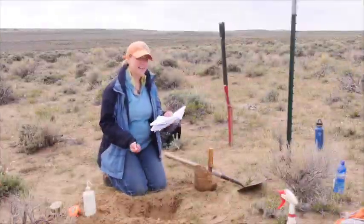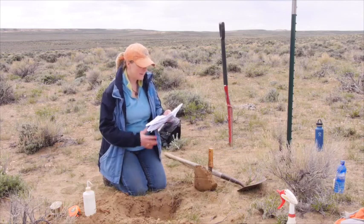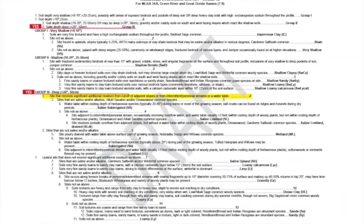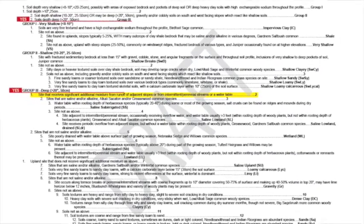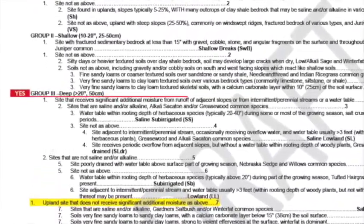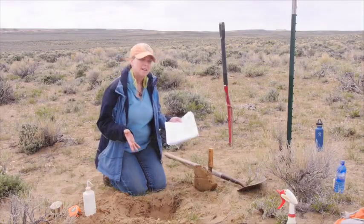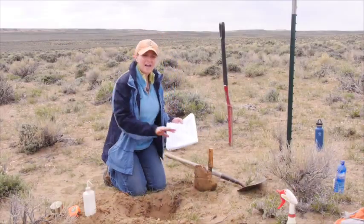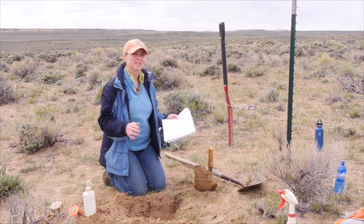Answering the key with greater than 20 inch depth puts us in Group 3. Group 3 is a set of deep sites, and the first question asks about sites that receive significant additional moisture from runoff of adjacent slopes, intermittent or perennial streams, or a water table. The alternate is an upland site that doesn't receive additional moisture — and that is our case. We're not in a riparian area or a run-in site; in fact, we're on more of a convex type of slope.